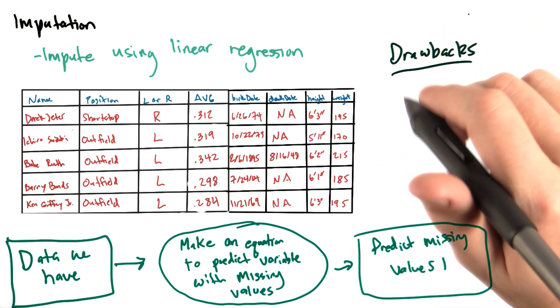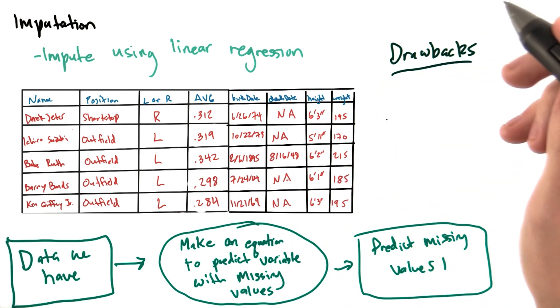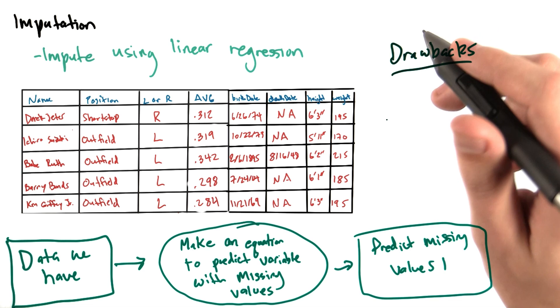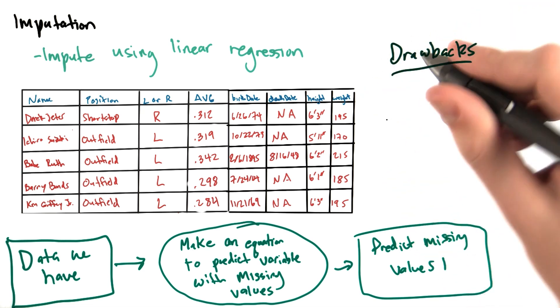What are the drawbacks of using this linear regression technique? Well, one negative side effect is that we would overemphasize existing trends in the data.